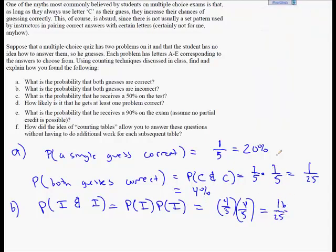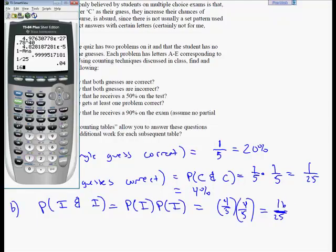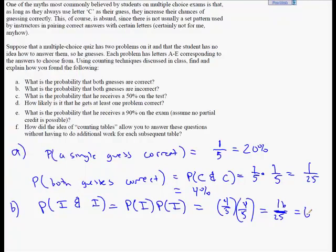Now one of the common mistakes that people make here is they try to just do, oh look, both guesses are correct one out of 25 times, then that means both guesses are incorrect 24 out of 25 times. Well, that's not true. You can also just get one correct, but not the other. So you've got to be careful how much we oversimplify this. 16 out of 25 is equal to 64%. So pretty good chance that you get both guesses incorrect.